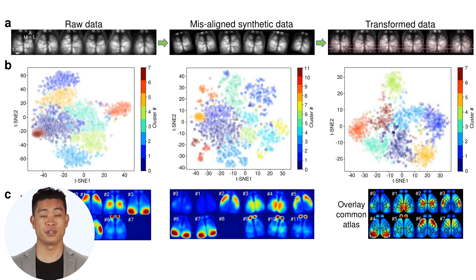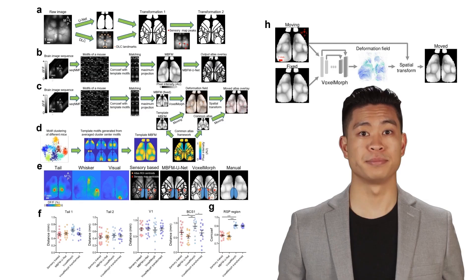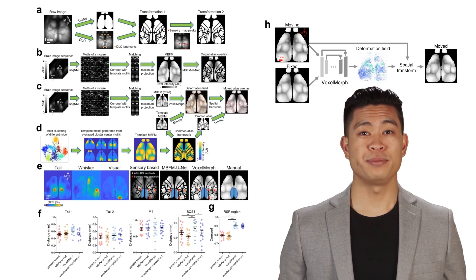As a further test of our software, we artificially generated a more diverse, misaligned test dataset by rotating the brain data to arbitrary angles and resizing the images. We found that the brain-to-atlas approach was able to normalize the motif cluster number in the misaligned datasets, which had apparently misclassified some motif patterns as new clusters.